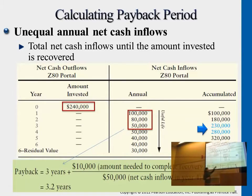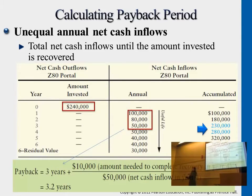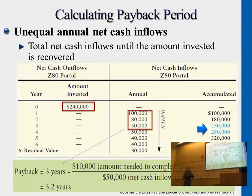The two accumulated amounts closest to the initial cost are the third and fourth years. You know you definitely need three years to get $230,000, then you have $10,000 more to cover. That $10,000 will be covered in the fourth year when you generate $50,000 more, so the remaining payback is 0.2 years. Altogether it takes 3.2 years to cover the whole $240,000 cost.